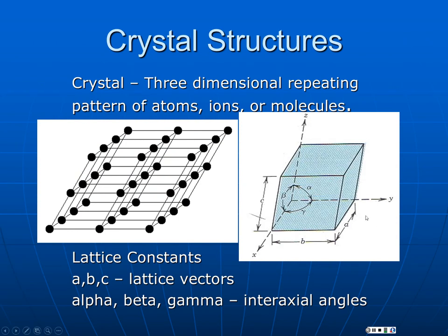For metals, this is going to be very simple, because every point in the lattice will have one atom associated with it. Crystal structures become very complicated in polymers and in ionic materials, particularly minerals, because more than one atom may be associated with one of these points. Don't think that a metals background prepares you to do crystallography in those materials — things get much more complicated. However, metals are quite simple because in general we have one atom associated with each lattice point.